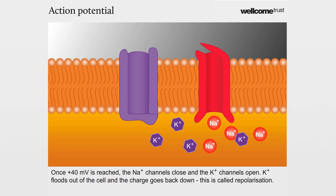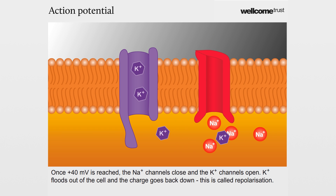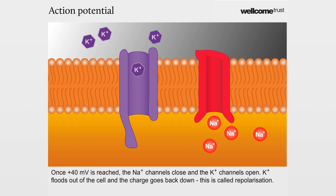Once 40 millivolts is reached, the sodium channels close and the potassium channels open. Potassium floods out of the cell and the charge goes back down. This is called repolarisation.